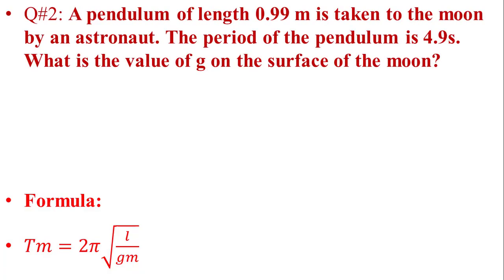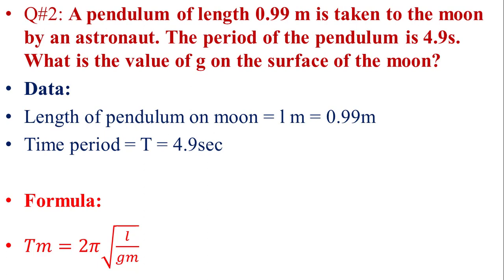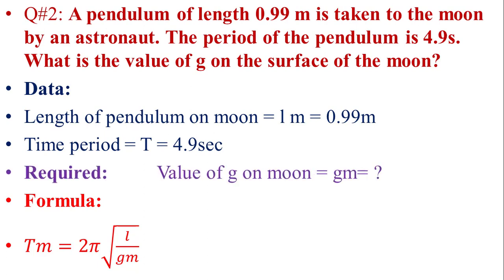Question No. 2: A simple pendulum of length 0.99 meters is taken to the Moon by an astronomer. The period of the pendulum is 4.9 seconds. What will be the value of g on the surface of the Moon? First, we write the given data: length of pendulum on Moon Lm equals 0.99 meters, and time period t equals 4.9 seconds.